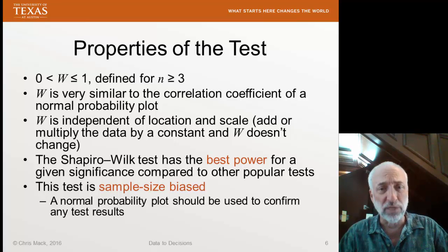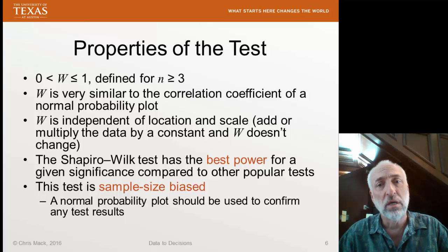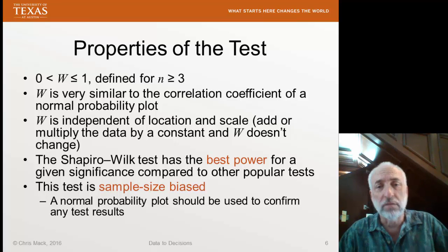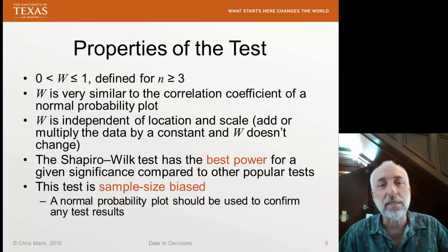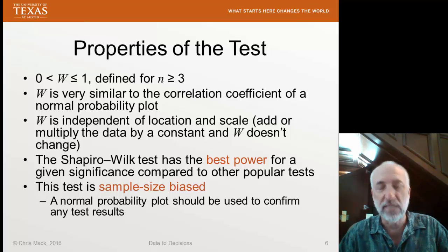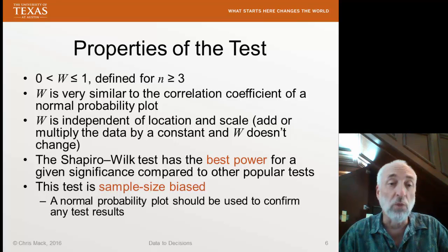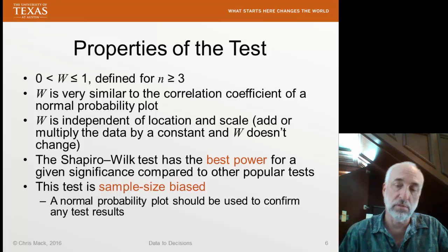However, the problem with this test — and in fact almost every test we might use for performing a test of normality — is that it is sample size biased. How you interpret the results very much depends on the sample size, and we'll get into that shortly. As a result, we almost always combine a Shapiro-Wilk test with a normal probability plot to help us interpret results.